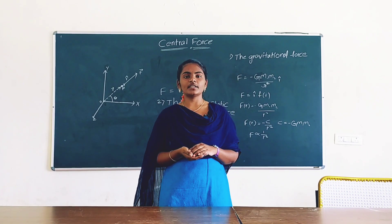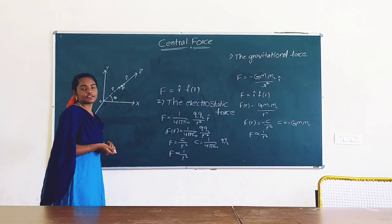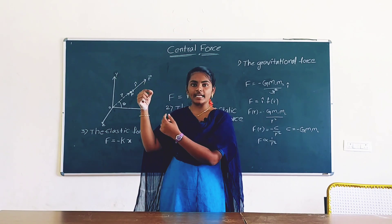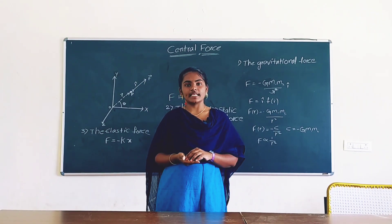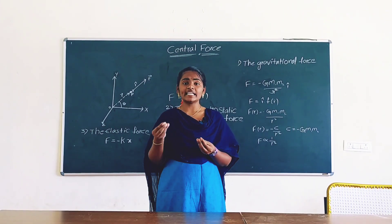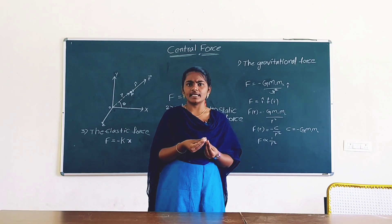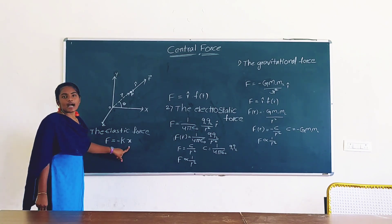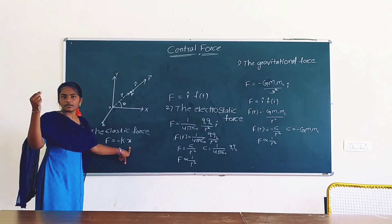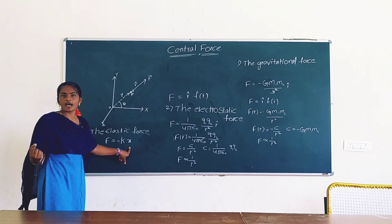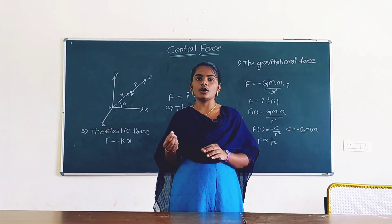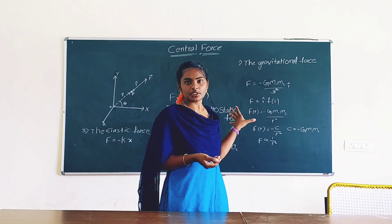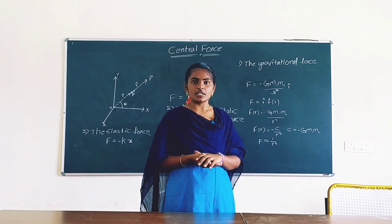The third example is the elastic force acting on a mass suspended to a spring. A particle is attached to one end of the spring and another end is fixed — this is an example of central force. The elastic force acting on the mass is expressed as F = −K·X, where K is the spring constant and X is the distance from the unextended position to the attached mass. The spring always pulls towards or pushes away from the fixed point.